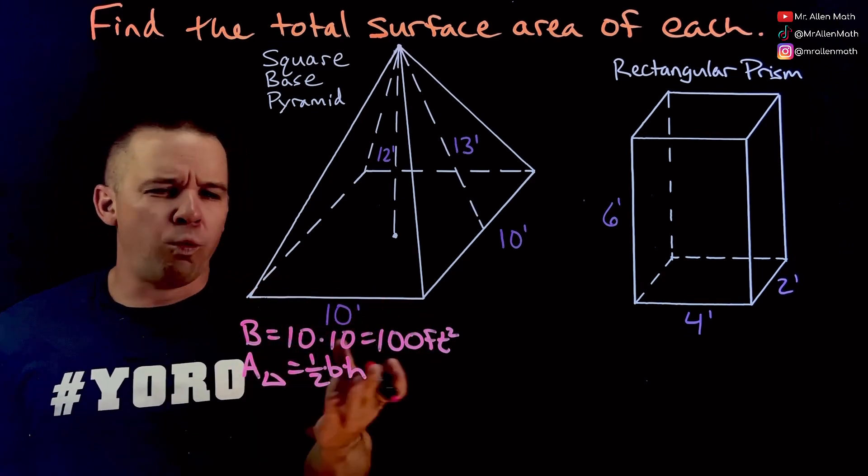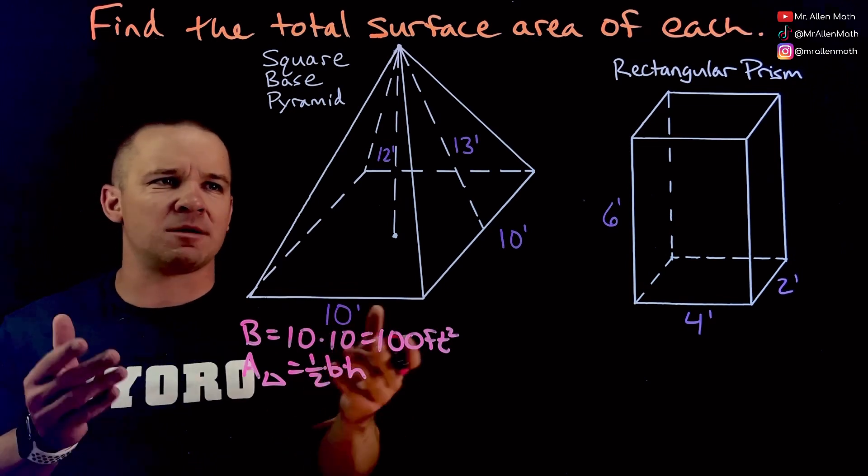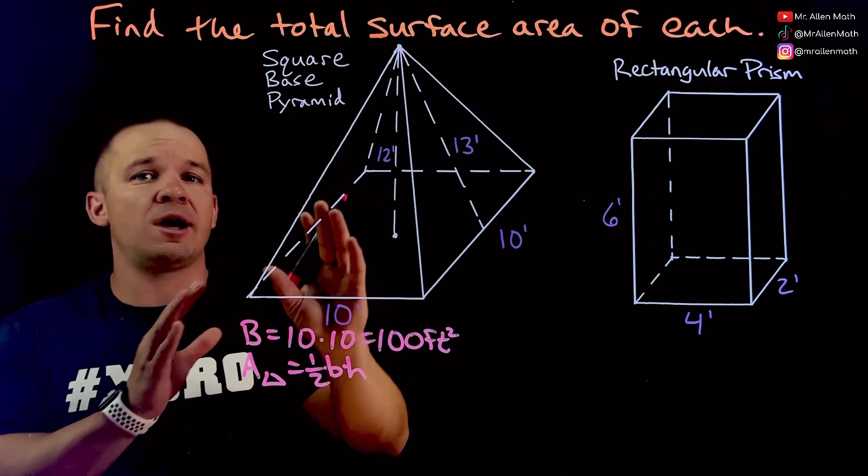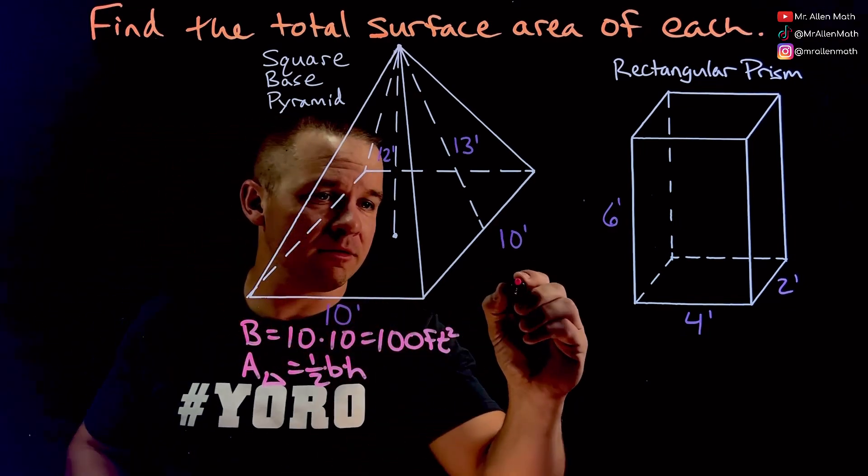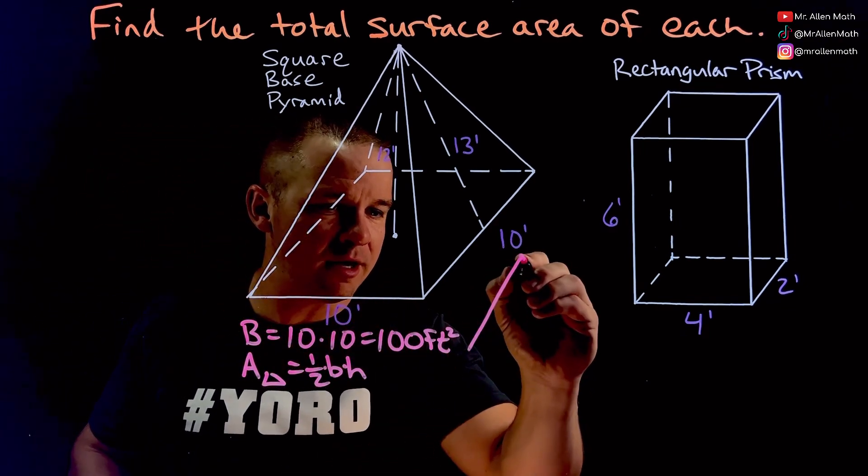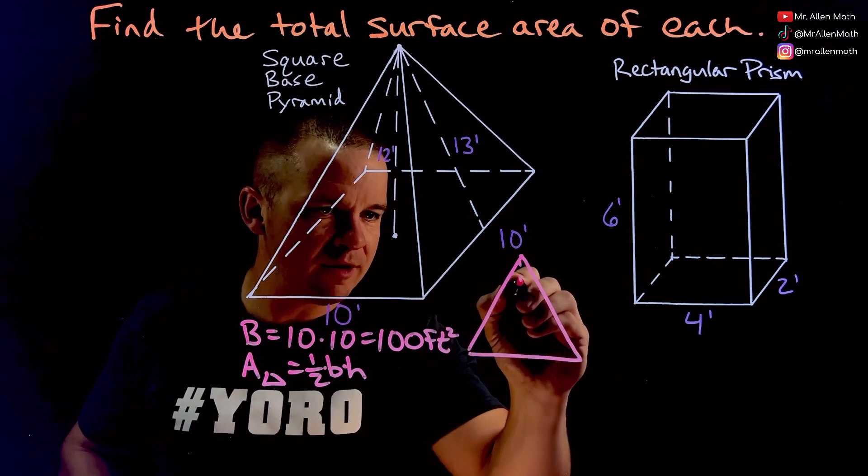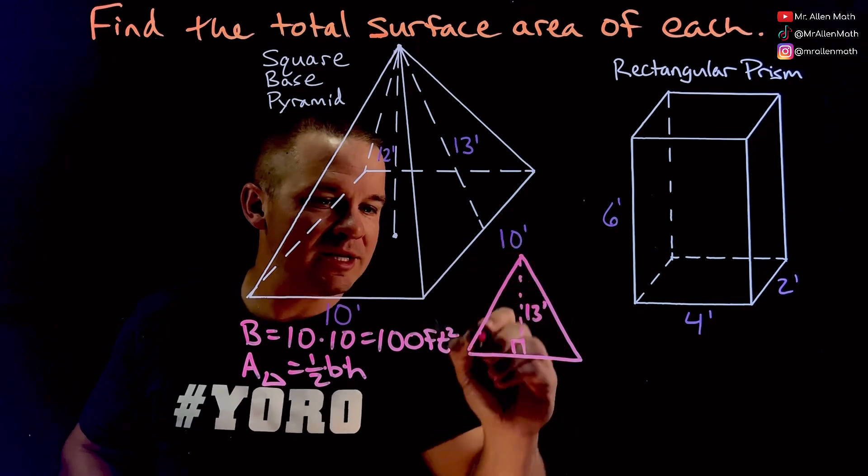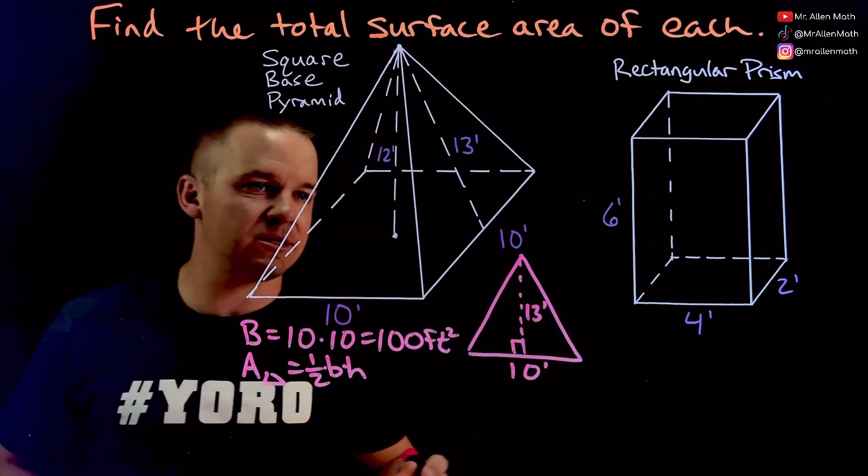So which dimensions are my base and my height? Well it can be helpful to redraw one of these triangular faces flat. So I'm going to take this triangle here, I've got my height right there, that's my 13 feet right there, and my 10 is my base.